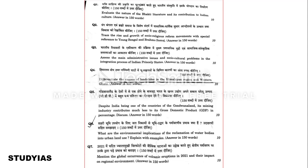The second question is: Trace the rise and growth of the socio-religious reform movement with special reference to Young Bengal and Brahmo Samaj. The third question is: Assess the main administrative issues and socio-cultural programs in the integration process of Indian princely states — a question from India after independence.